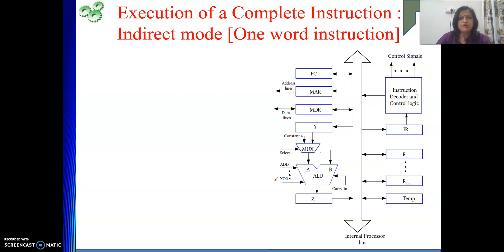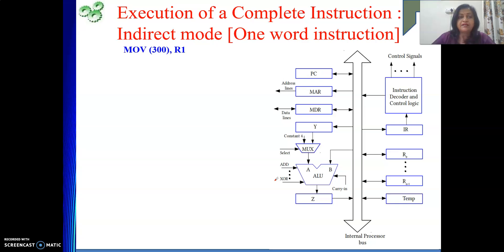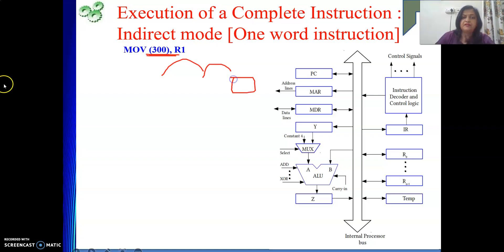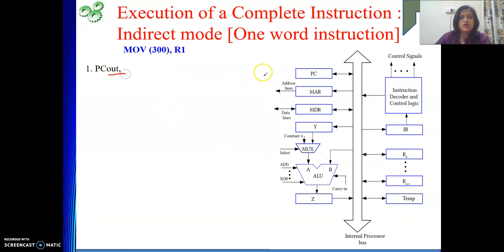First let's do this for a one-word instruction, meaning the length of the instruction is one word and the address part will also come inside that. For example, writing (300) means it is memory indirect mode — the number 300 is an address, and at that address your operand is not there; at that address you will get another address, and at that address your data is there in memory. So two times we need to refer to memory to get the data. We are writing these control signals with respect to this particular diagram and organization.